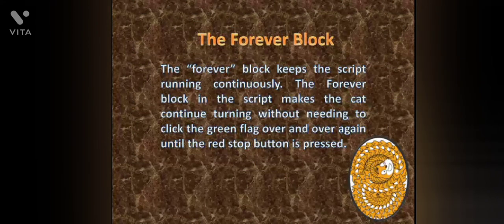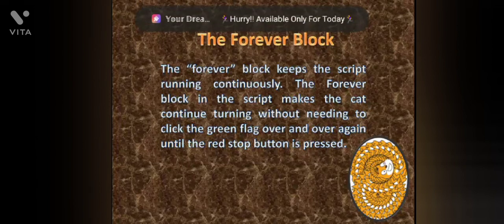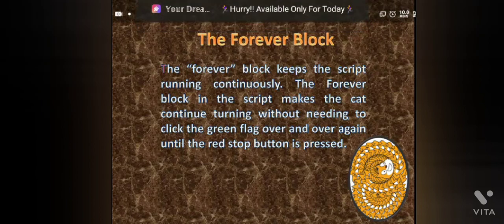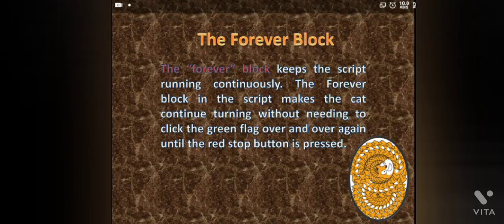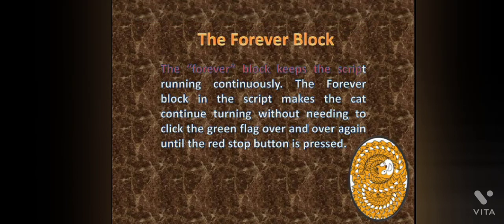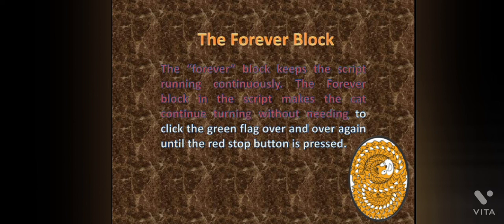The forever block keeps the script running continuously. The forever block in the script makes the cat continue turning without needing to click the green flag over and over again, until the red button is pressed.